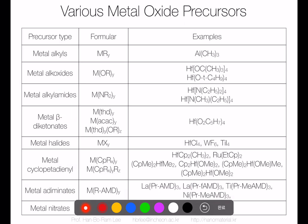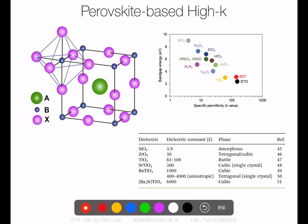Various types of precursors are used for aluminum oxide, hafnium oxide, and zirconium oxide ALD. For aluminum oxide, TMA (trimethylaluminum) is the most common. Alkyl oxide and alkylamide precursors are the most common for high-k metal oxides.